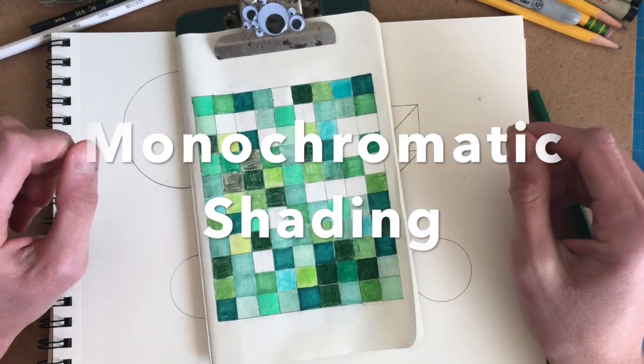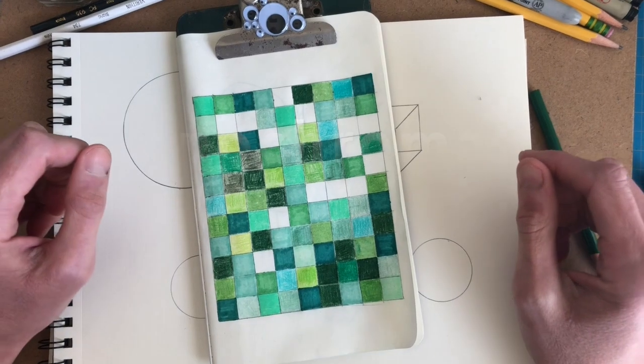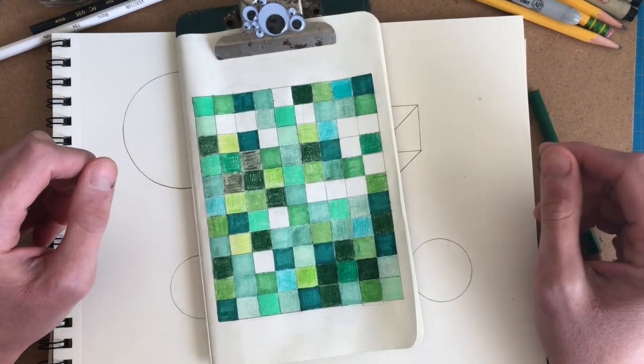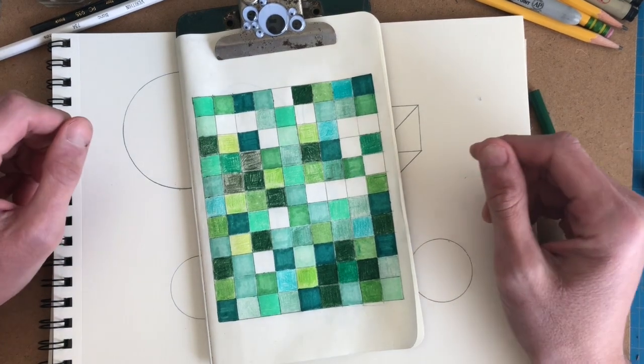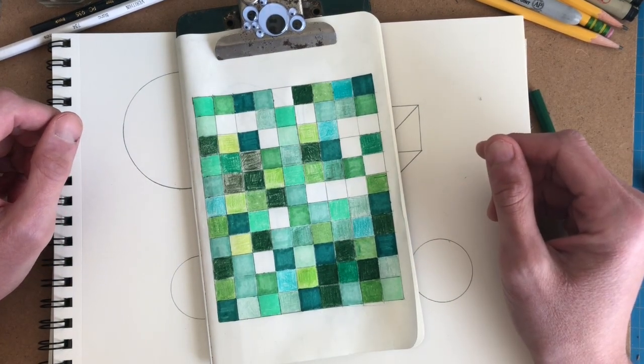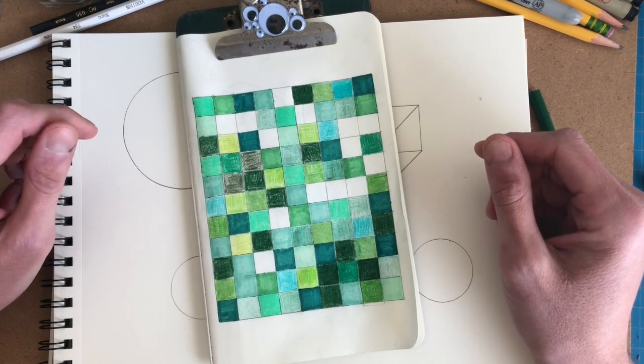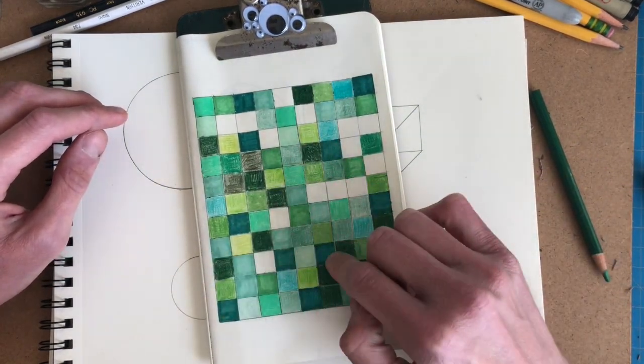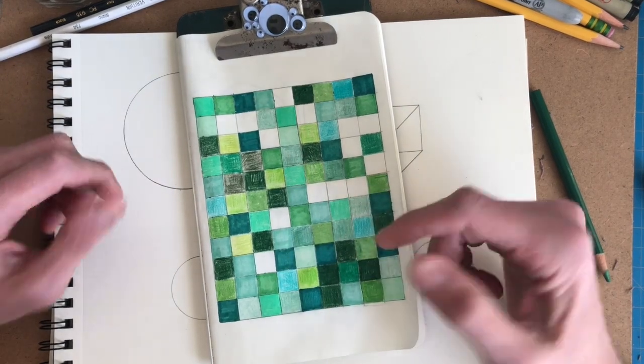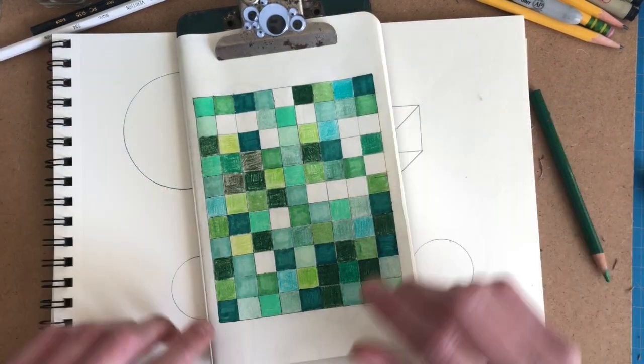Hi and welcome back. Today we're going to talk about the art concept called monochromatic. Monochromatic means it's a work of art, a painting, a photograph, a drawing, maybe a print that is primarily made up of a variety of the same color.